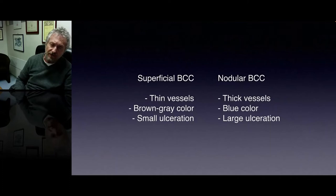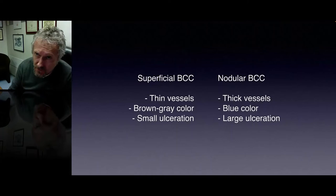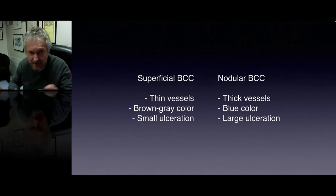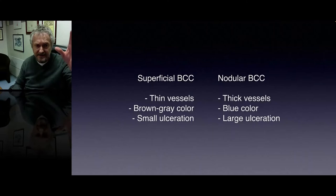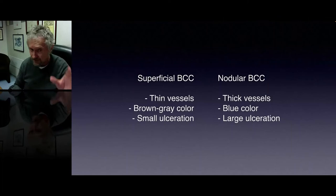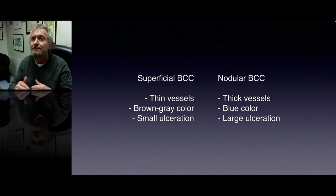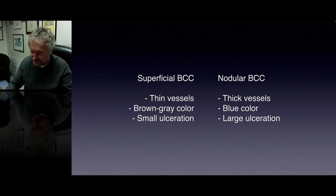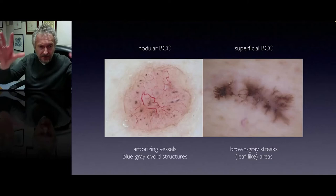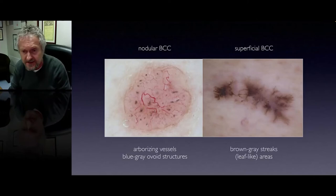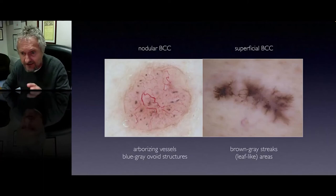Not only today are we able to recognize basal cell carcinoma with much more confidence, but we are also able to differentiate between a superficial BCC versus a nodular and more infiltrative BCC because of the different dermoscopic findings. In superficial BCC we see more frequently thin vessels, brown and gray color, and small multiple ulcerations. In nodular and infiltrative BCC you see thicker vessels, much more blue color, and larger ulcerations. Here you can see the difference: nodular BCC shows larger arborizing vessels and blue-gray ovoid nests on the left side, while on the right side a superficial BCC shows brown-gray color, brown-gray streaks on the periphery, and leaf-like areas.